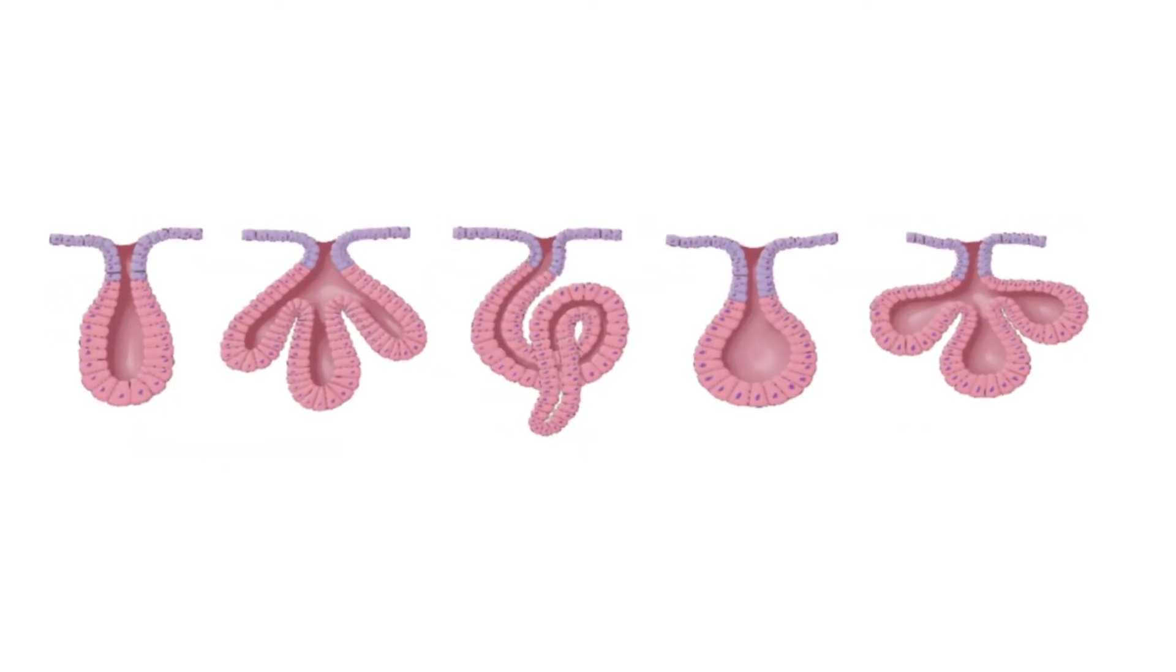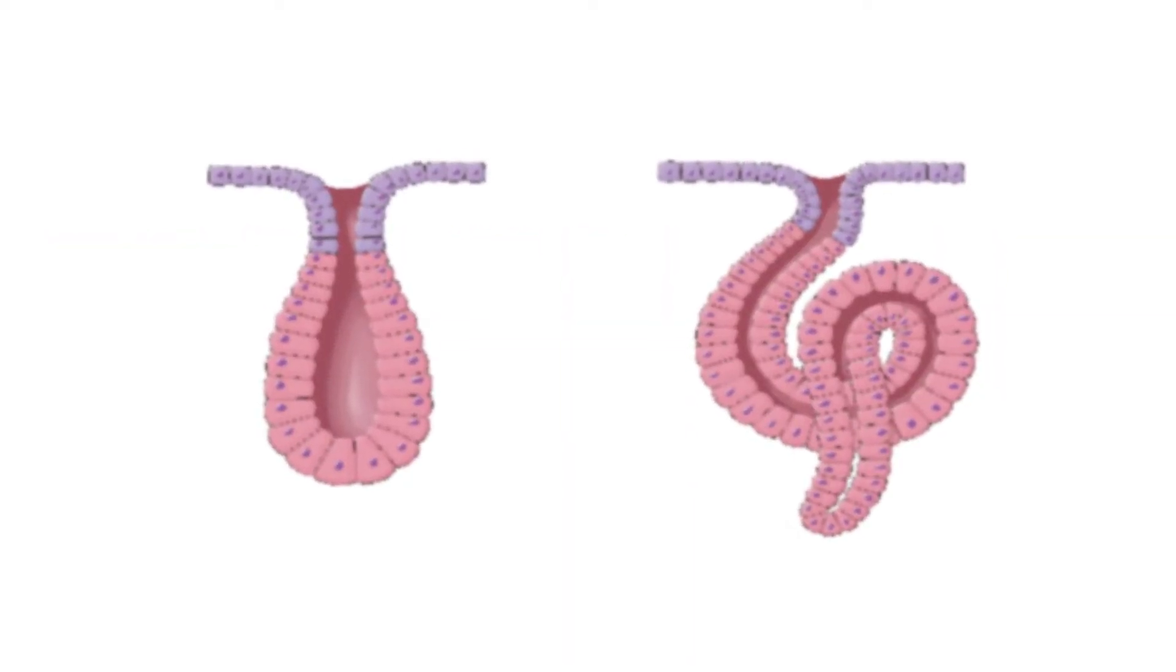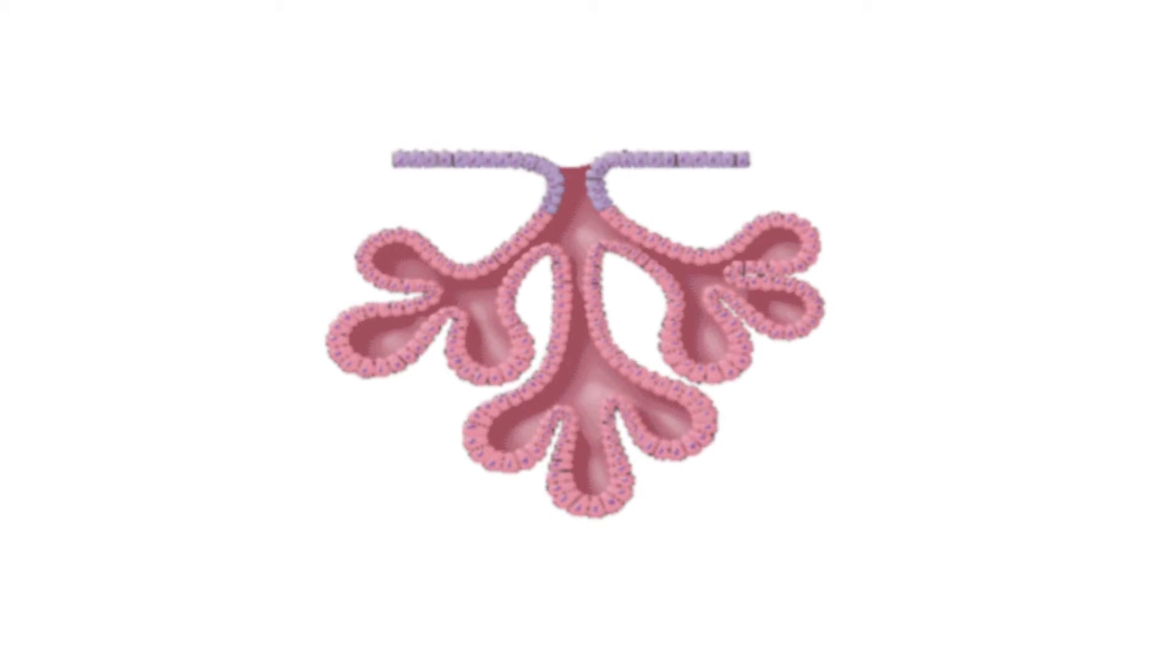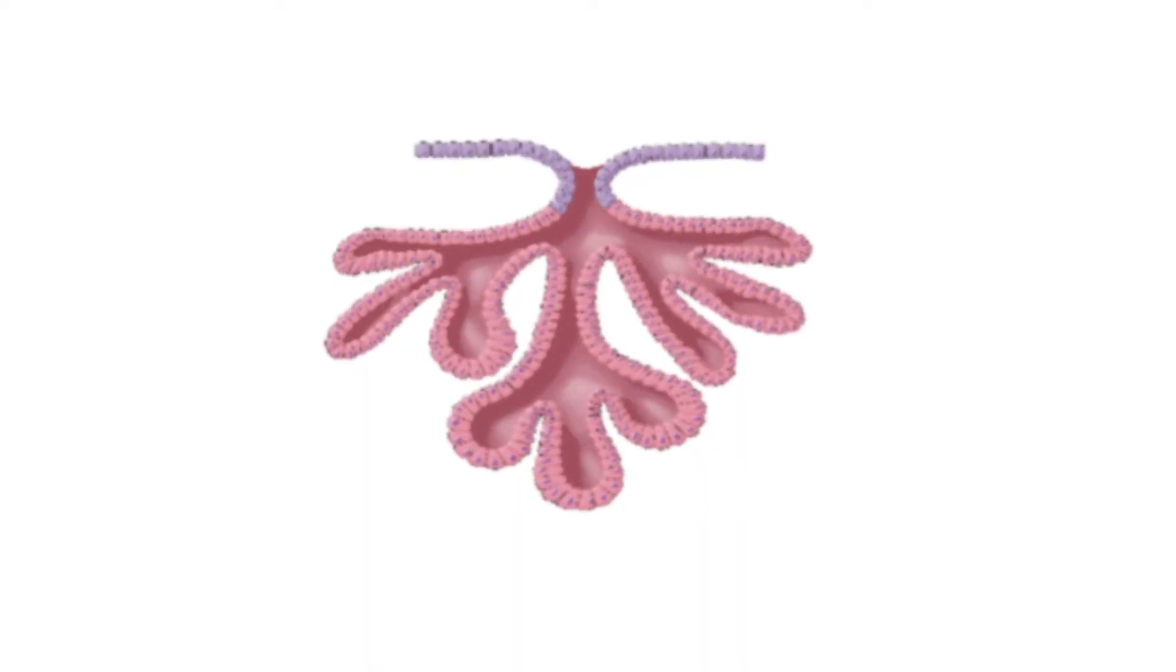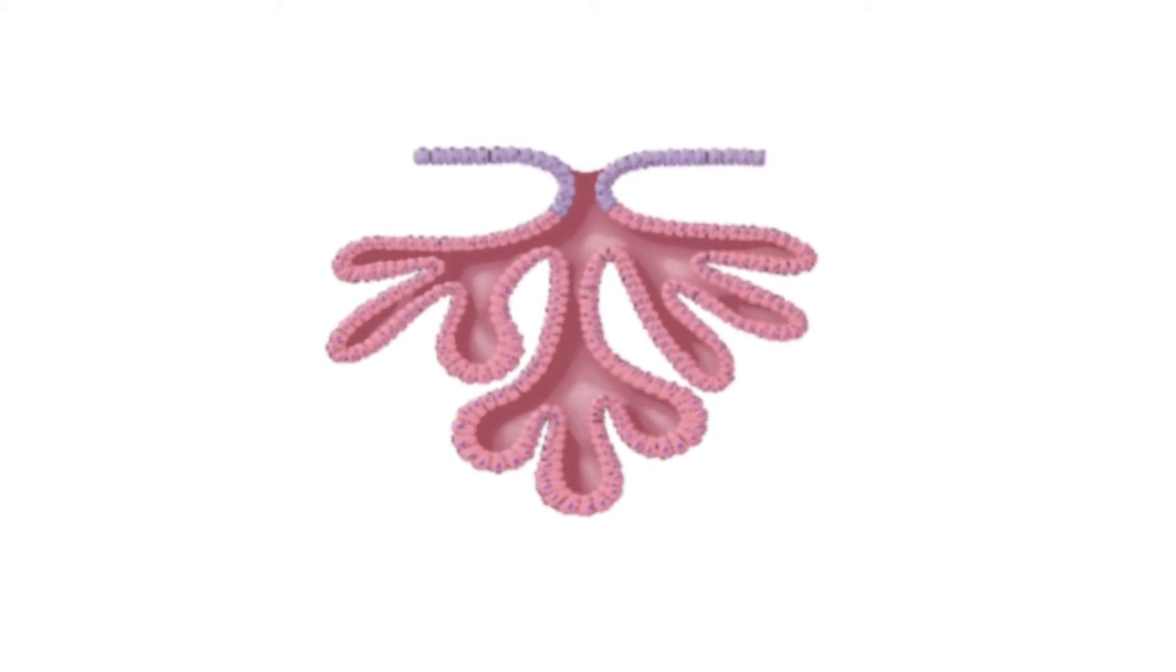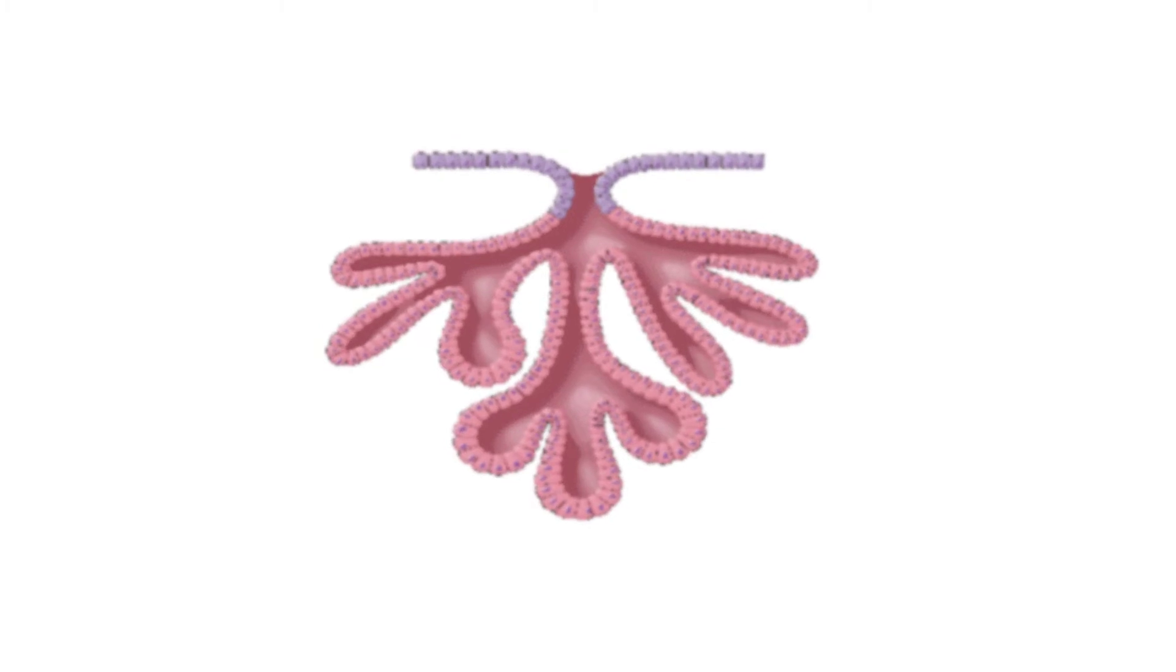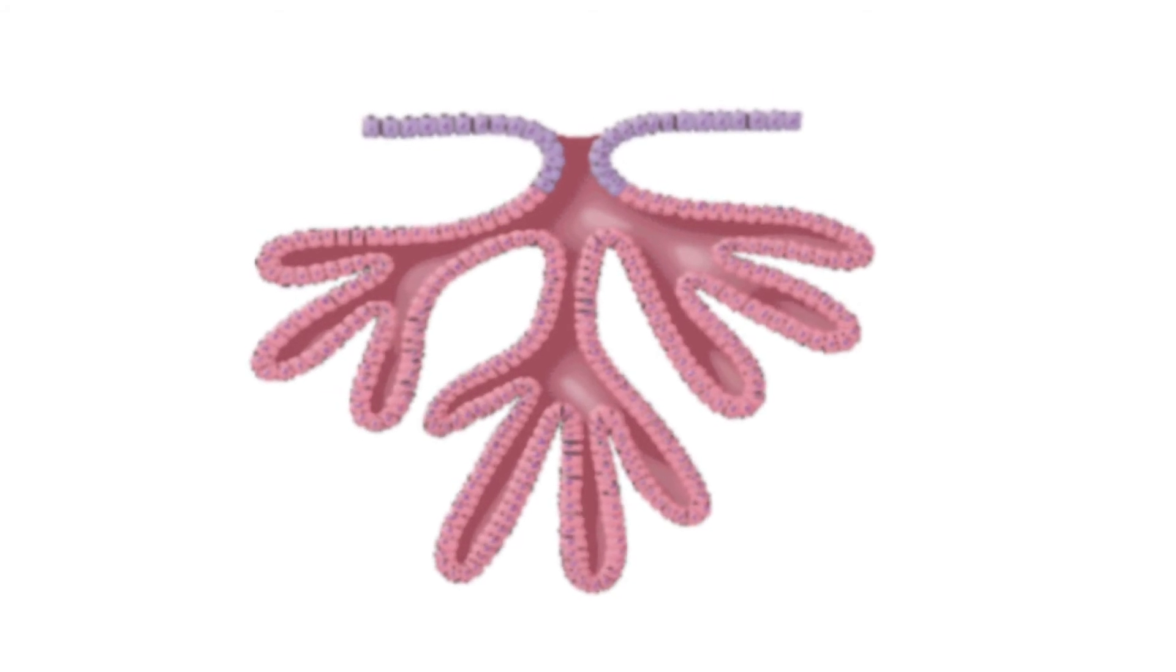In tubular glands, the ducts can be straight or coiled, whereas tubes that form pockets are alveolar, such as the exocrine portion of the pancreas. Combinations of tubes and pockets are known as tubulo-alveolar compound glands. In a branched gland, a duct is connected to more than one secretory group of cells.